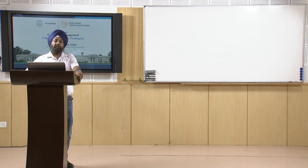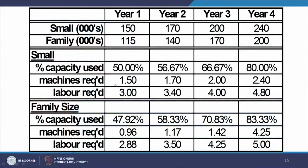This is a representative analysis shown for one year. If we do these calculations for all four years, we can determine the percentage capacity used, machines required, and labor force required for each year. Maximum utilization reaches about eighty to eighty-three percent in year four when demand is highest; for the first three years we are not fully utilizing the available capacity.